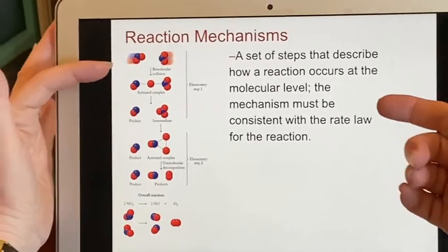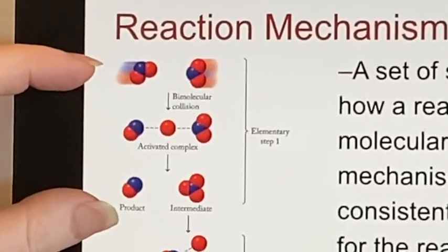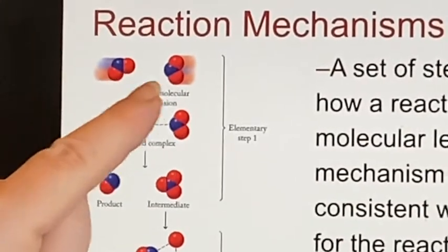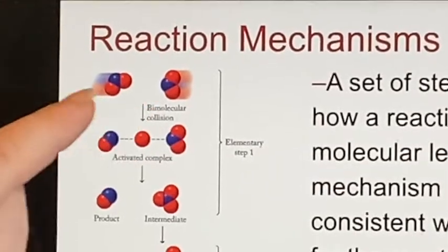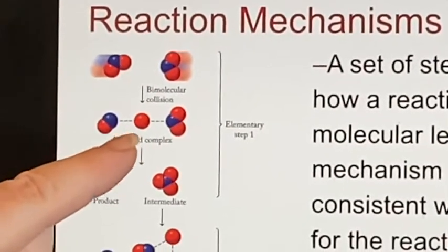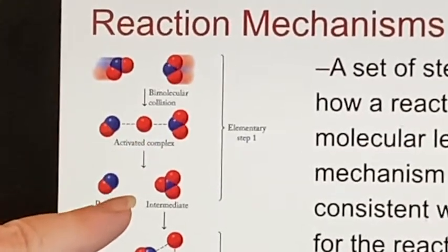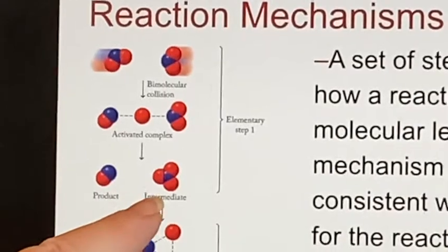Here is an example, and it starts with an elementary step that includes a bimolecular collision. The two nitrogen dioxide molecules are colliding. They are forming an activated complex, which then continues on to form nitrogen monoxide and nitrogen trioxide.